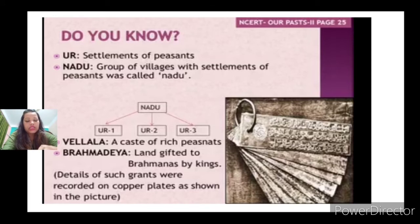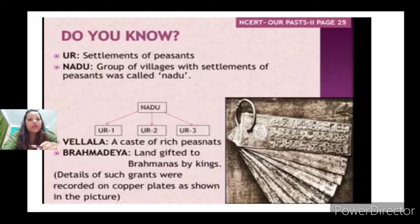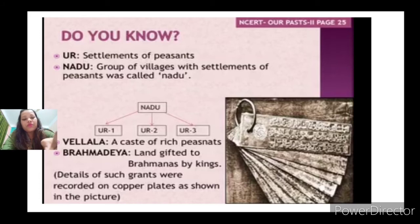'Velala' is a caste of rich peasants. 'Brahmadeya' refers to land gifted to Brahmanas by kings — details of such grants were recorded in copper plates. As discussed in the previous video, Brahmanas helped kings write prashastis and record their victories, and in return, land grants were given to them. So, Velala are the rich high-caste peasants, Naru is the assembly of peasant settlements, and Ur is one single settlement of peasants.